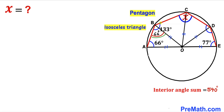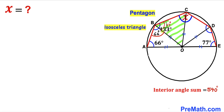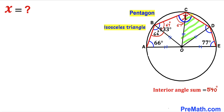Since angle OAB is 66 degrees and the full angle ABC is 133 degrees, the remaining angle OBC equals 133 − 66 = 67 degrees. Focusing on triangle BOC, this is also an isosceles triangle with OB = OC, so angle OCB equals angle OBC = 67 degrees. Next, focusing on triangle COD — also isosceles with OC = OD — both base angles are equal; I'll call each angle alpha.